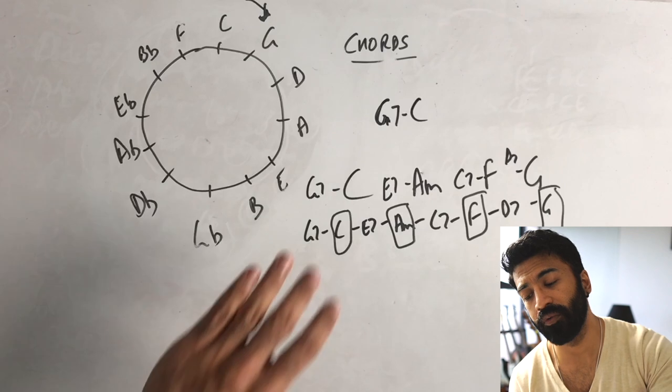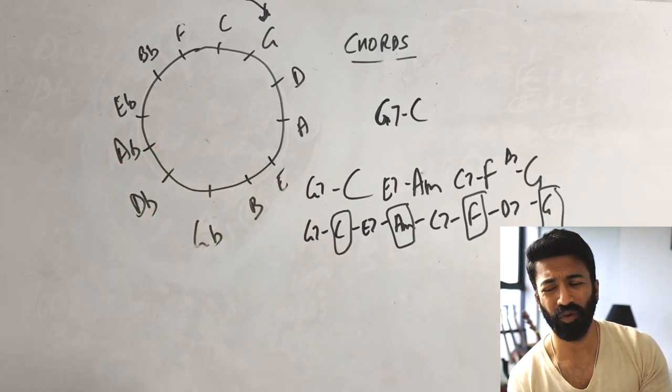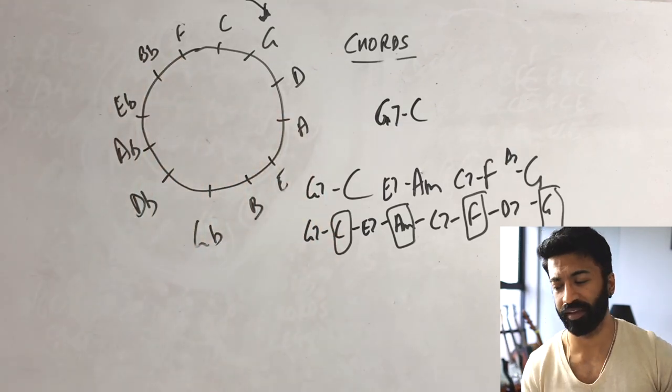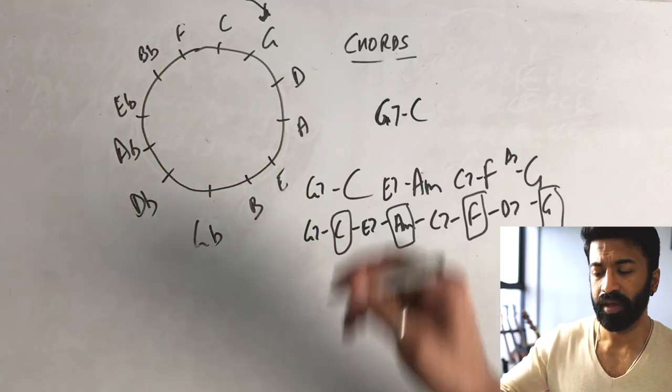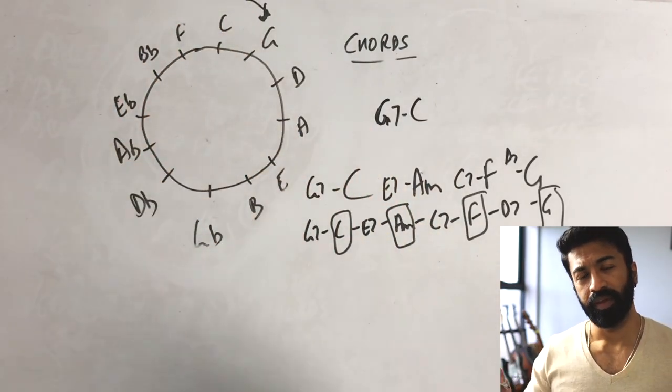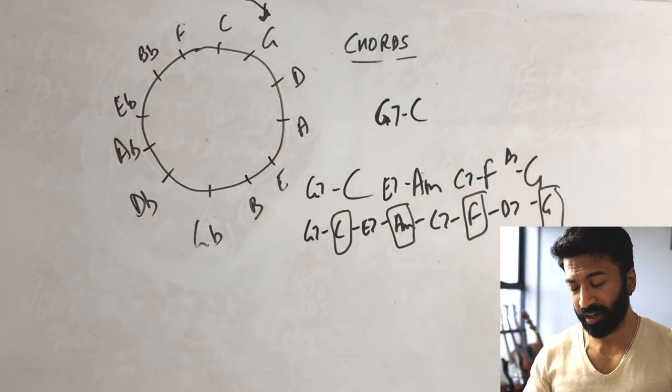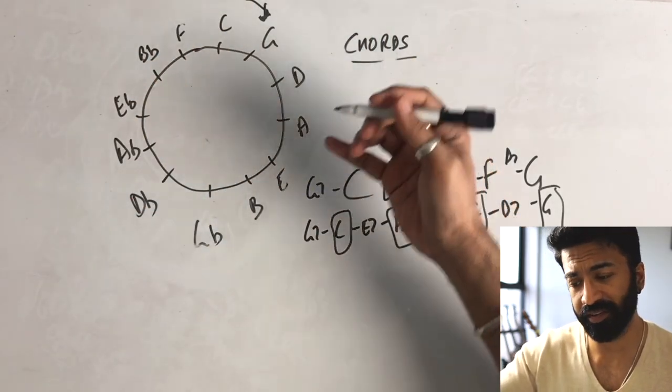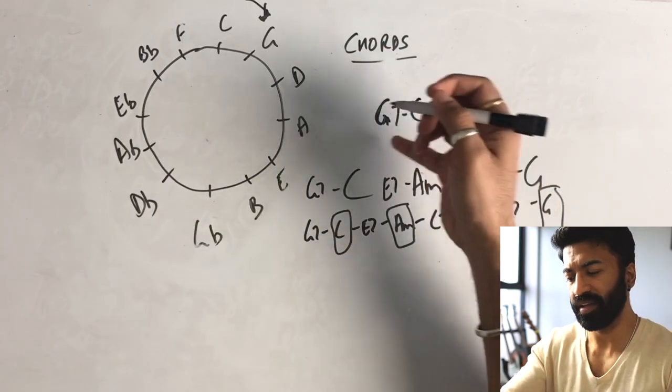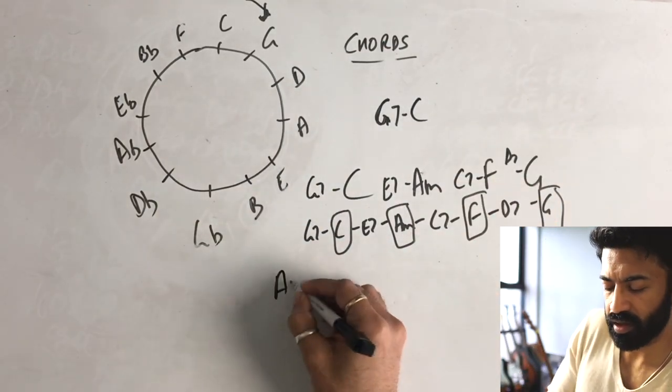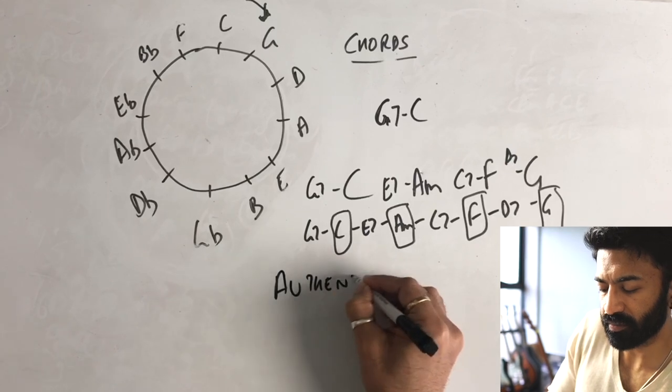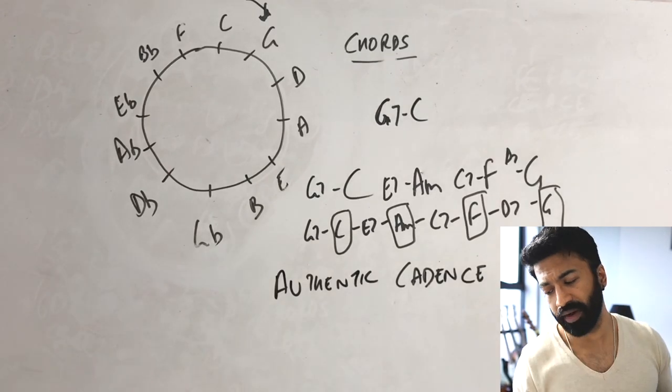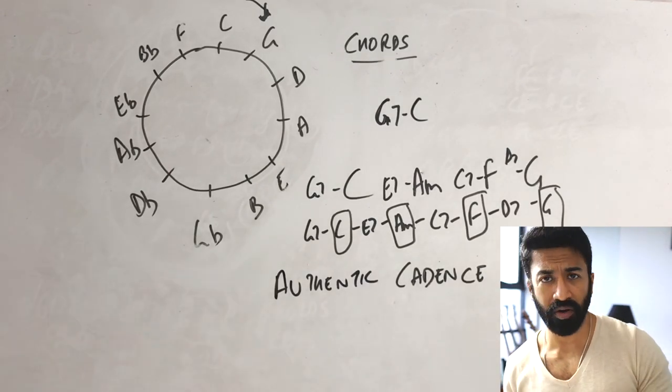That's the reason why I prefer to always remember the circle of fourths and not the circle of fifths. So this is actually called an authentic cadence, which is my 5 to 1 movement. This is 5 chord to 1 chord. It's called authentic cadence. I'm going to make a separate video on cadences. So don't worry about that.